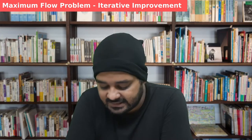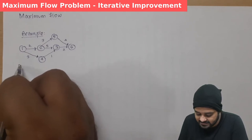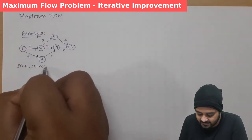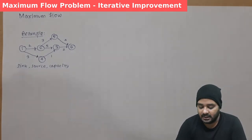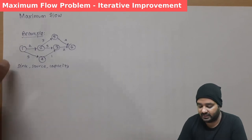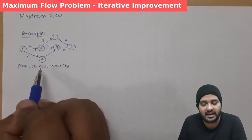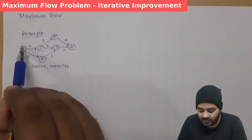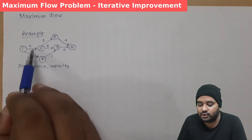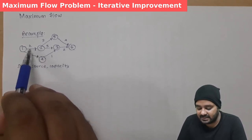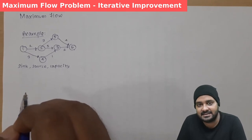We shall look at it with the help of an example. There are three important things to know: sink, source, and capacity. The sink node is a node which doesn't have any outgoing edges — here, node 6 is the sink. The source node is a node which doesn't have any incoming edges — here, node 1 is the source. Capacity is the weight of the edges connecting the vertices; for example, the capacity from node 1 to node 2 is 2.